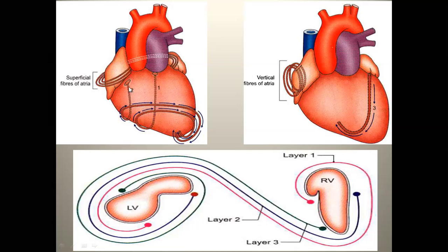Next is the second number — the fibres of the right auricle. The next number is the vertical fibres of the atria. Atrial vertical fibres on the inferior surface run to the left. Next are the deep muscles — deep muscles may be in 3 layers.